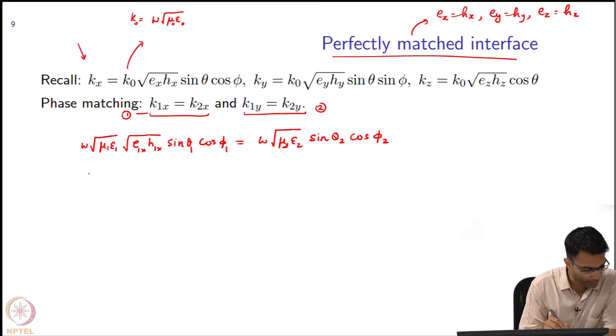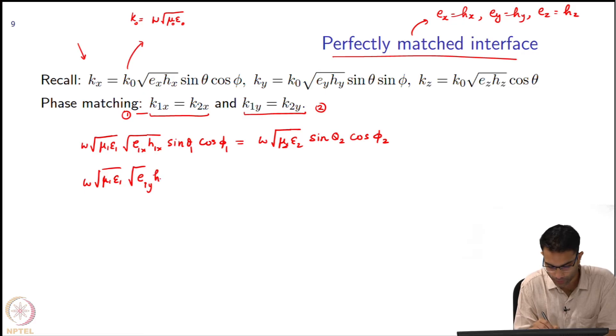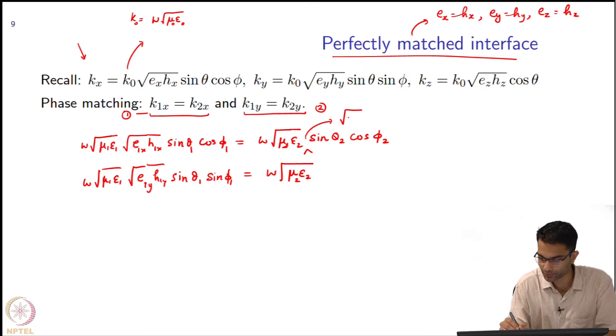What about the second condition? It is going to give me same thing over here: mu_1 epsilon_1 square root e_1y h_1y sin theta_1 sin phi_1 omega square root mu_2 epsilon_2. You guys forgot to point out - I forgot a term over here - square root of e_2x h_2x sin theta_2 sin phi_2.